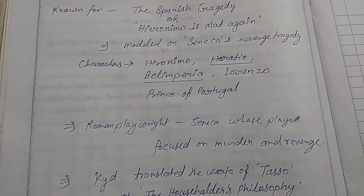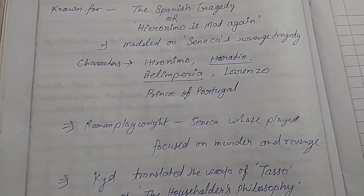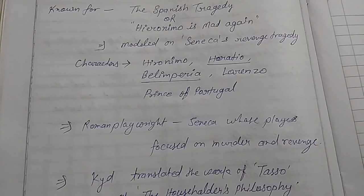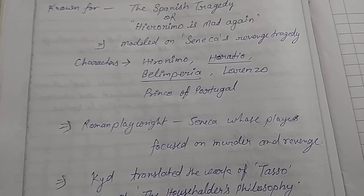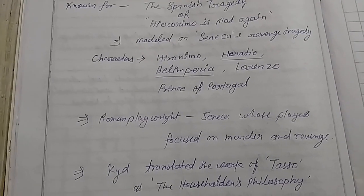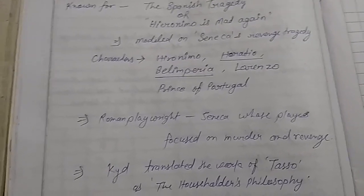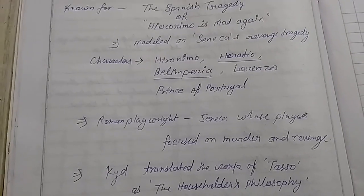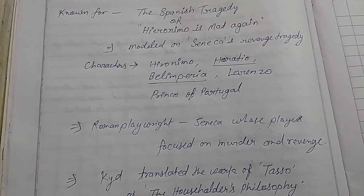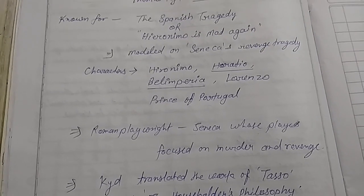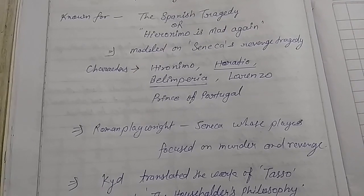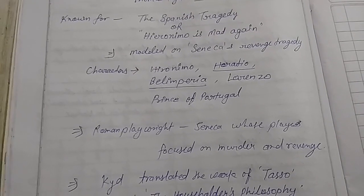But at last, Hieronimo, the Marshal of Spain, took revenge and murdered Lorenzo and the Prince of Portugal. So this is all about the story of the Spanish Tragedy. The characters of this tragedy have been asked many times in NatJRF and SET exams. These are the important points and notes about the Spanish Tragedy.